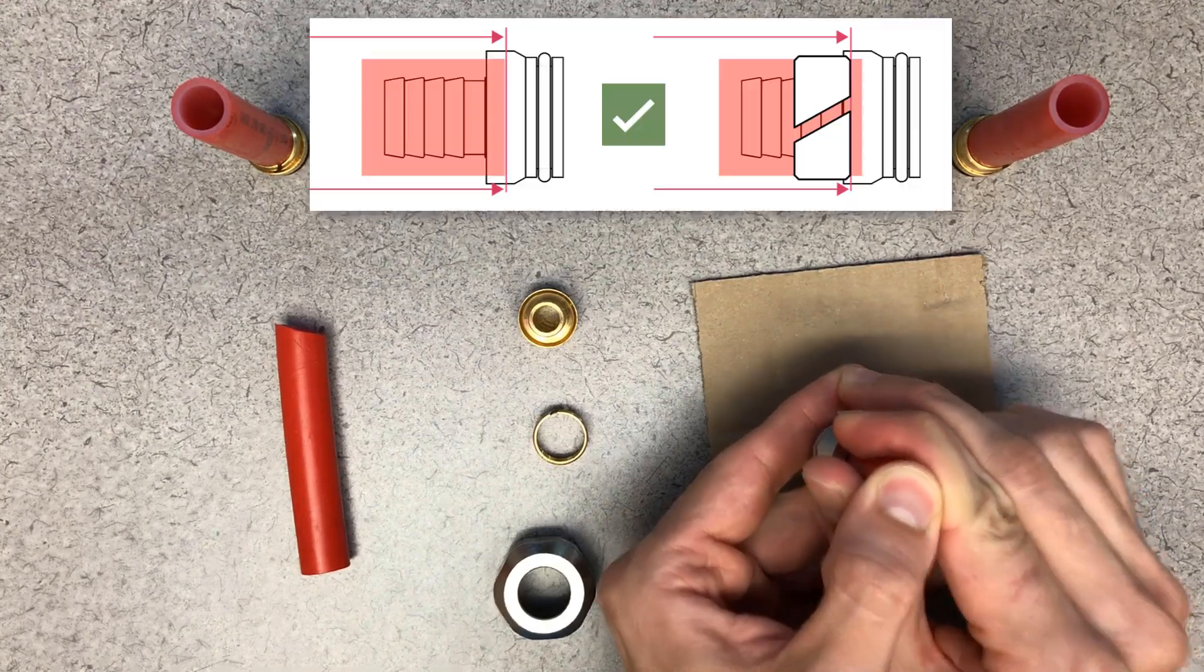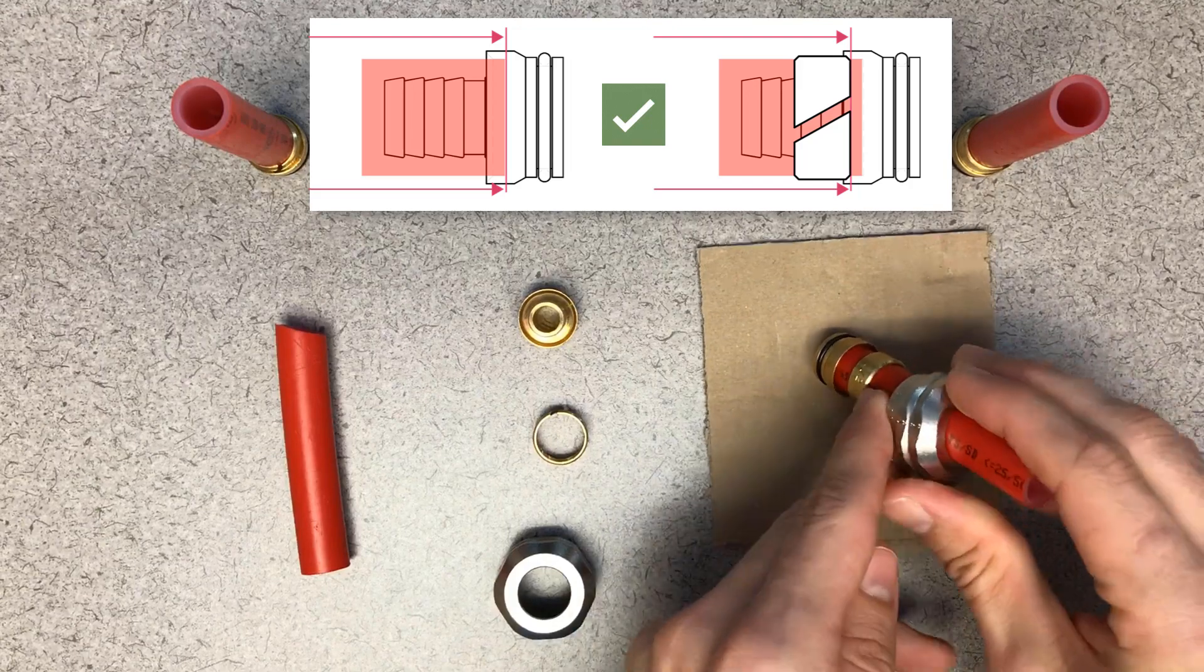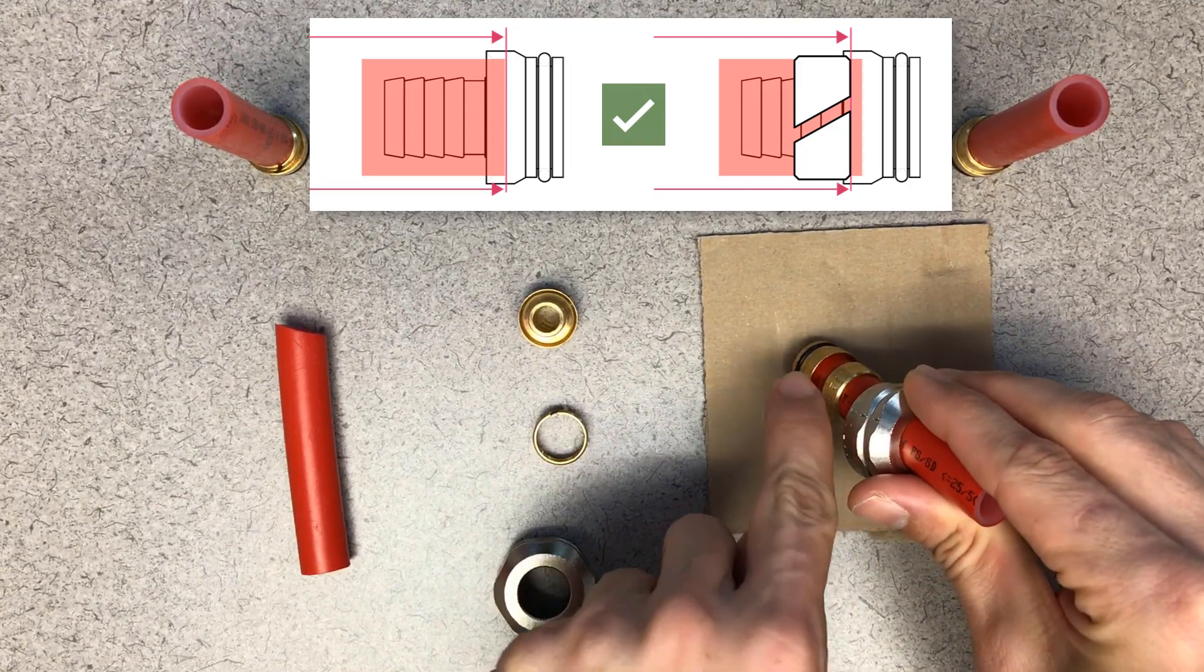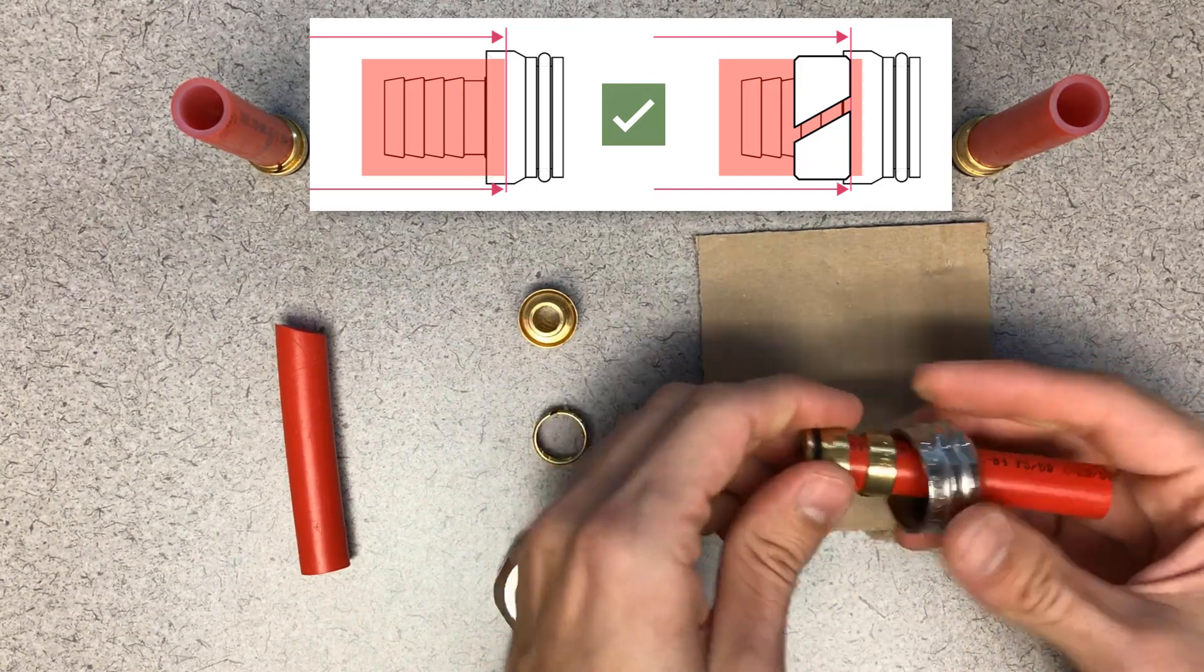You can actually hear and feel it go that last little bit. So once you do that, you shouldn't have any brass that you can see on the inside where the pipe actually makes contact a little bit further into the fitting. So that looks good.